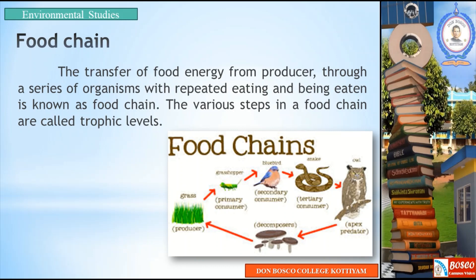The various steps in a food chain are called trophic levels. The first level is called the producer trophic level, the next is the consumer trophic level, and then the decomposer trophic level. Each level of food energy transfer is called a step in the food chain.